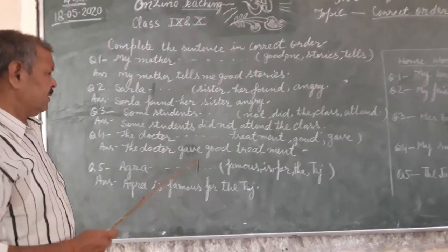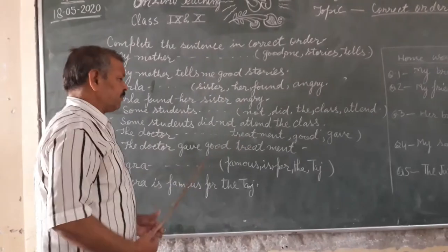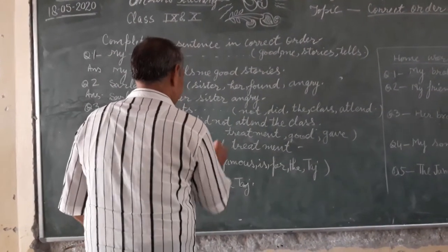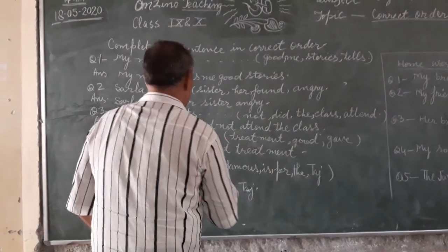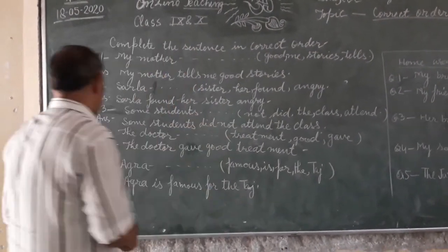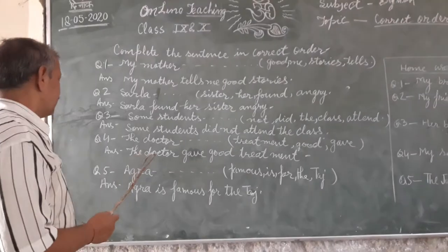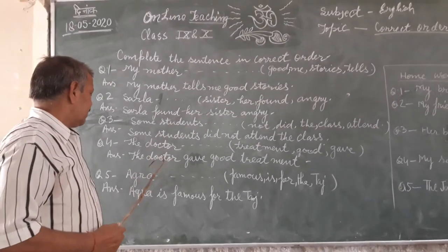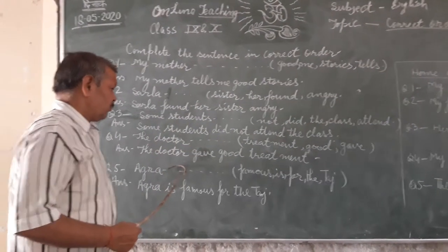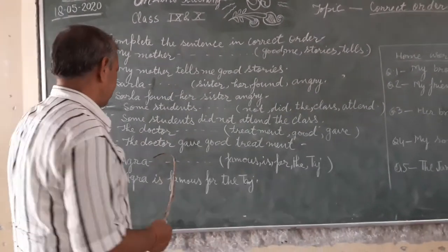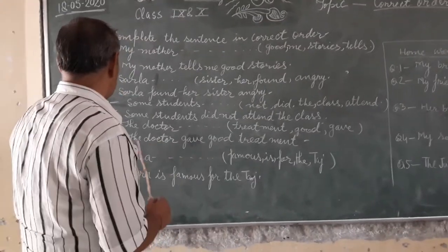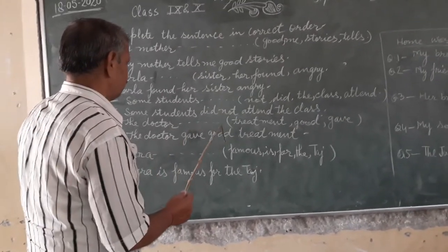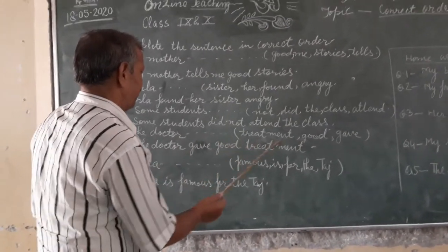The fourth sentence involves: the doctor, treatment, would be given. After 'doctor' we have to keep the verb, so the correct order is: the doctor gave a treatment.